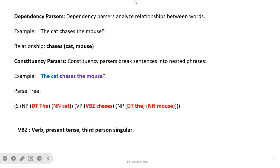In the dependency parser example: 'the cat chases the mouse'. The relationship is between cat and mouse, and that relationship is expressed by 'chases'. So chase links cat to mouse — cat chases the mouse.